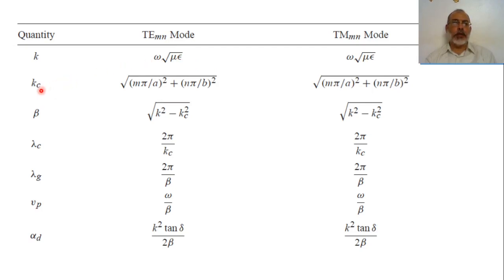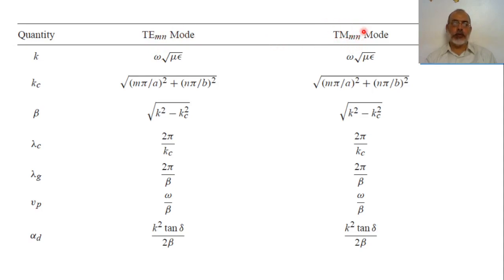The cutoff wave number Kc for a rectangular waveguide is the square root of (m·pi/a)² plus (n·pi/b)², valid for both TE and TM modes. For the TE mode the lowest mode is the 1-0 mode; for TM it is the 1-1 mode. In general, for any MN mode the cutoff frequency is the same for TE and TM.